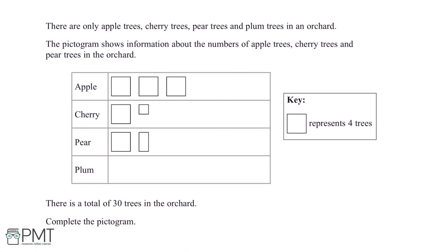There are only apple trees, cherry trees, pear trees and plum trees in an orchard. The pictogram shows information about the number of apple trees, cherry trees and pear trees in the orchard. There is a total of 30 trees in the orchard. Complete the pictogram.